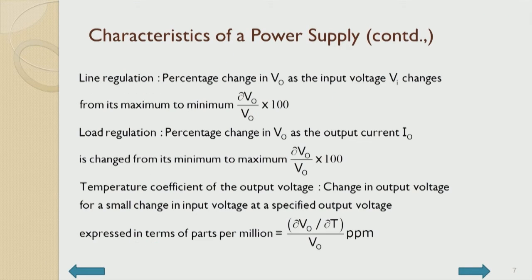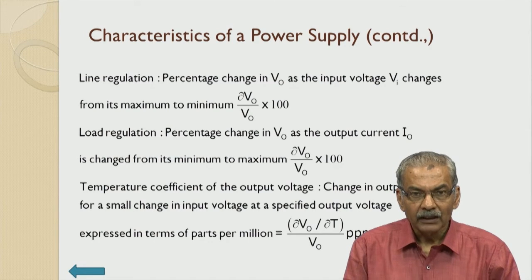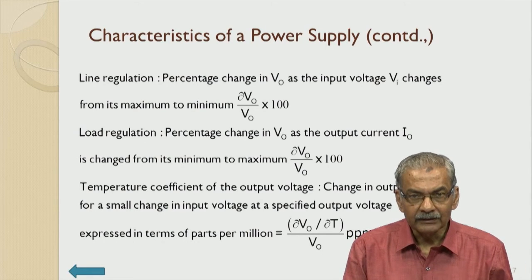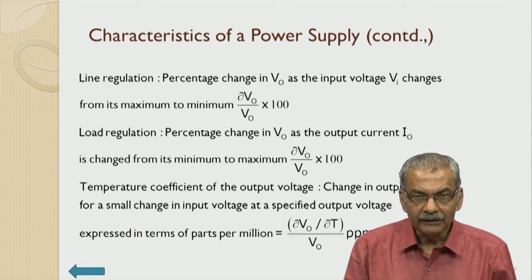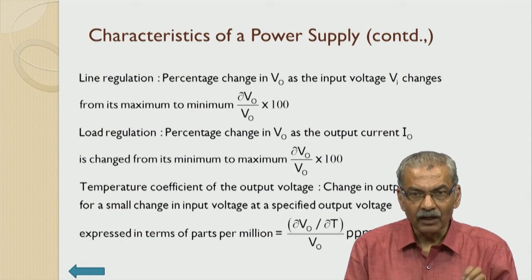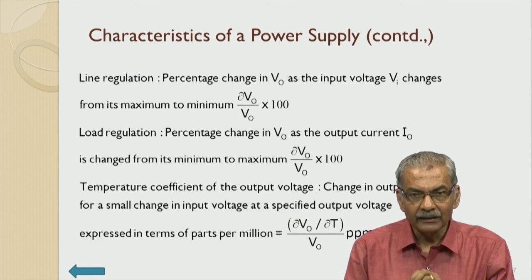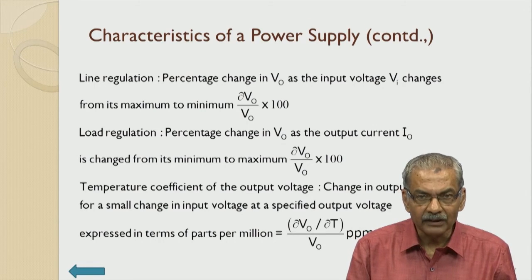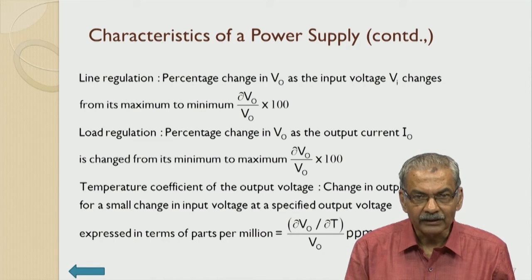Let us consider other parameters associated with a voltage regulator. Line regulation is the percentage change in V_out as the input voltage VI changes from its maximum to minimum — that is ΔV_out/V_out × 100.